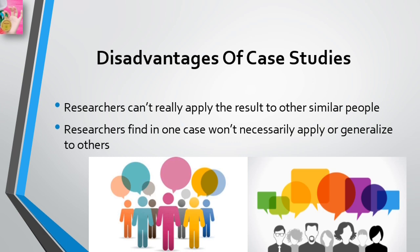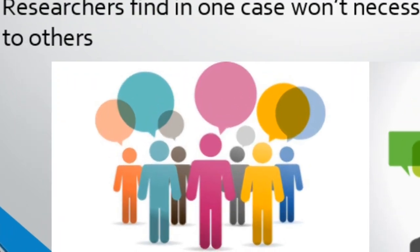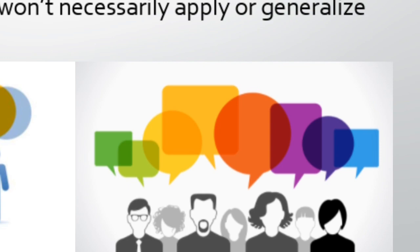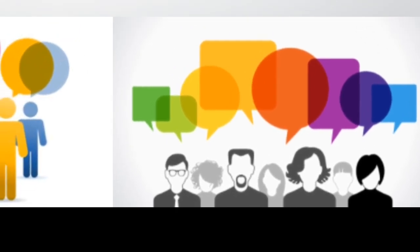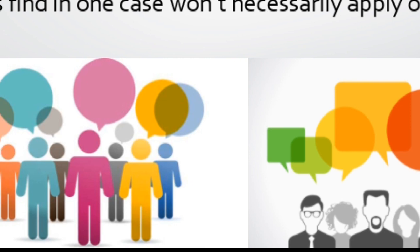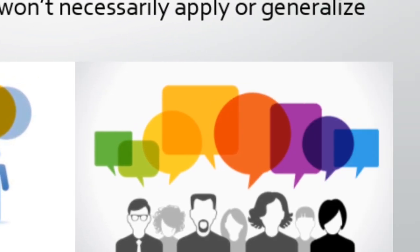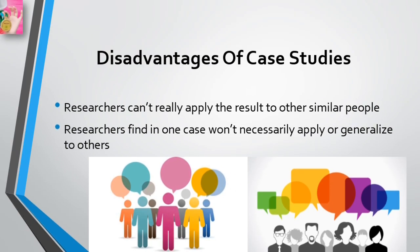The disadvantage of the case study is that researchers can't really apply the results to other similar people. In other words, they can't assume that if one person had the same kind of experiences growing up, he or she would turn out just like the person in another case study. People are unique and have too many complicating factors in their life to be that predictable. What researchers find in one case won't necessarily apply or generalize to other cases.